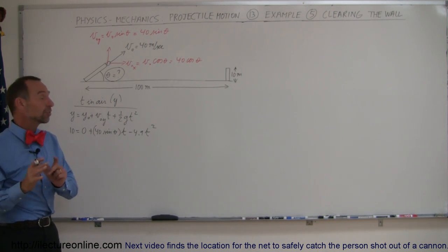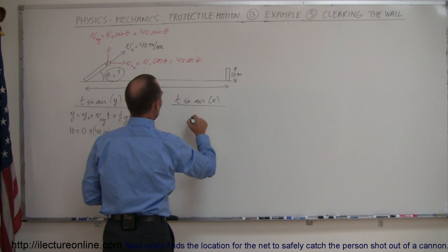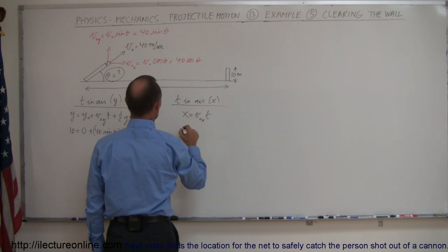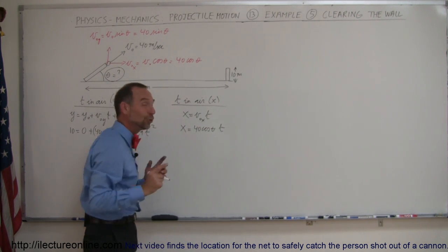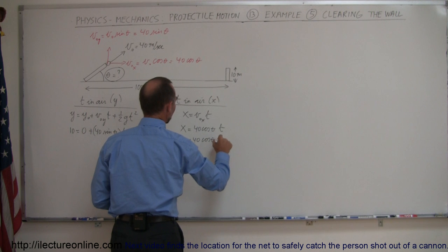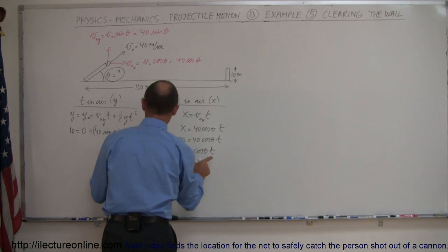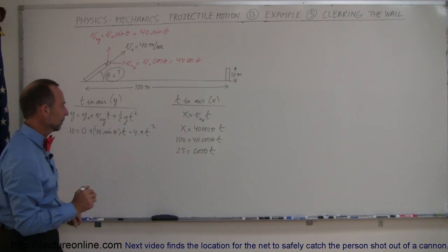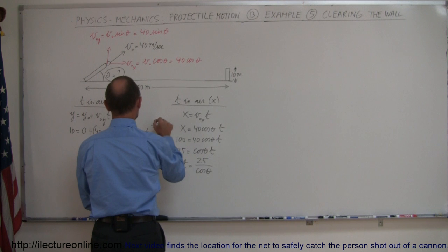We'll use the horizontal equation: x = v_initial_x · t = 40cos(θ)·t. We know the x distance is 100, so 100 = 40cos(θ)·t. Dividing both sides by 40 gives 2.5 = cos(θ)·t. Now we have two equations and two unknowns. Solving for t: t = 2.5 / cos(θ), and we'll plug that into the y equation.